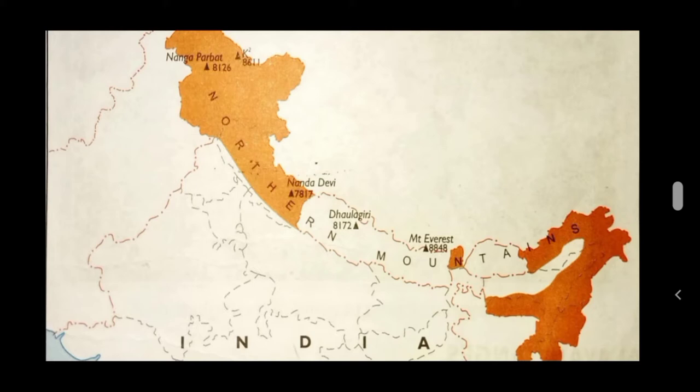The Himalayan ranges cover the states of Jammu and Kashmir, Himachal Pradesh, Uttarakhand, parts of Uttar Pradesh, West Bengal, Sikkim, and the seven northeastern states of Assam, Arunachal Pradesh, Meghalaya, Nagaland, Manipur, Mizoram, and Tripura.